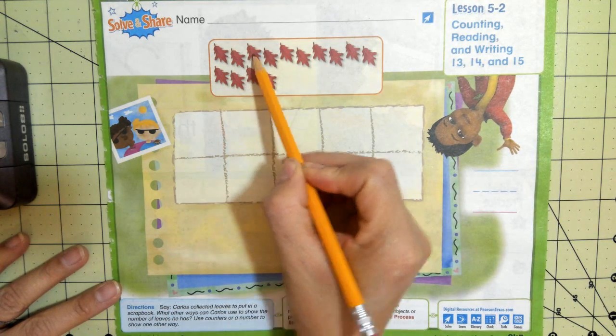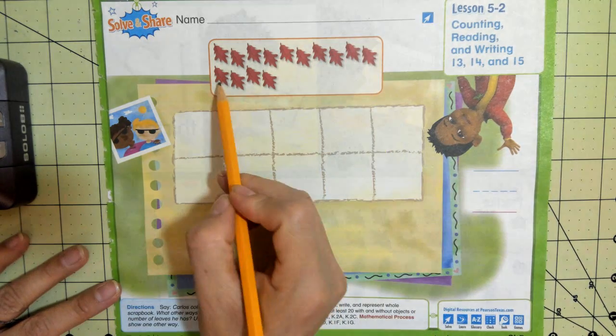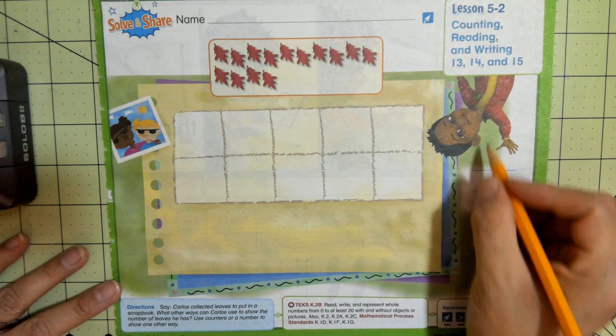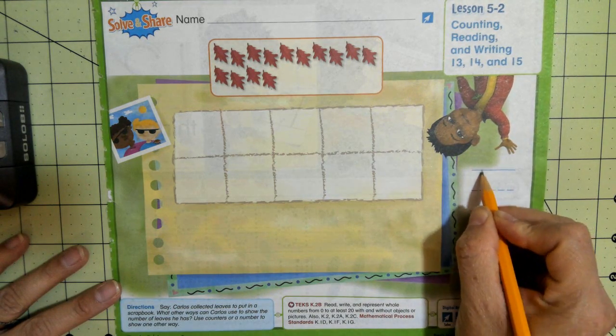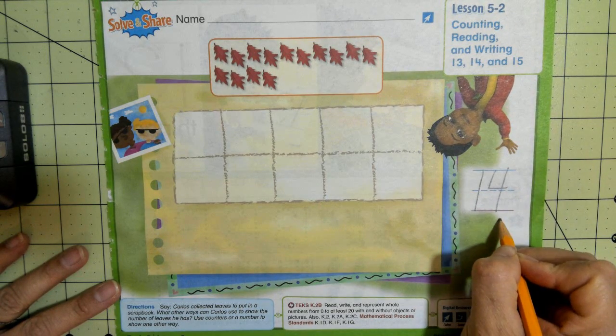1, 2, 3, 4, 5, 6, 7, 8, 9, 10, 11, 12, 13, 14. So he collected 14. So 14 is a 1 and a 4. The 1 is first and then the 4.